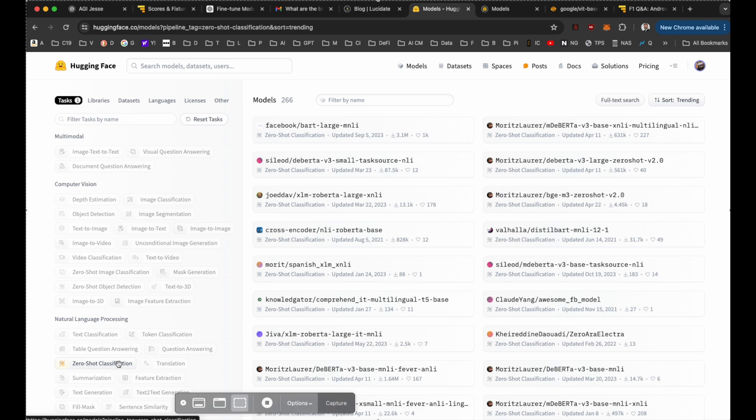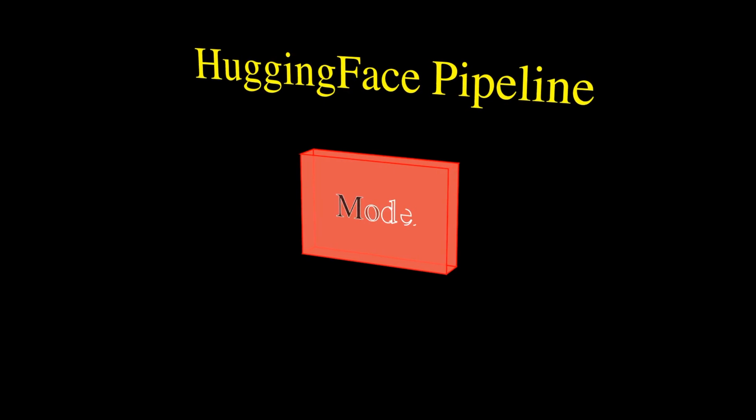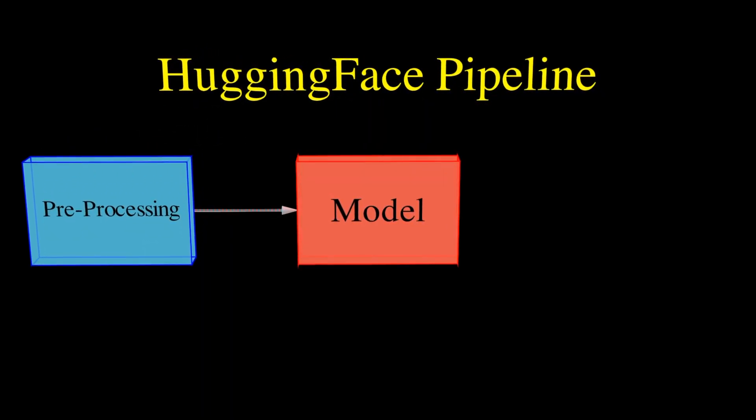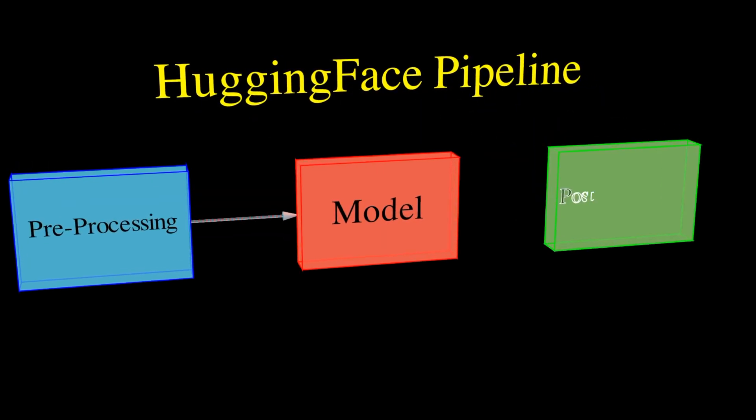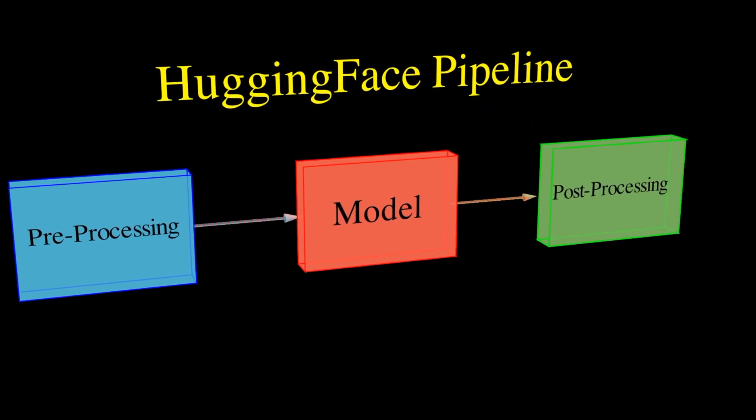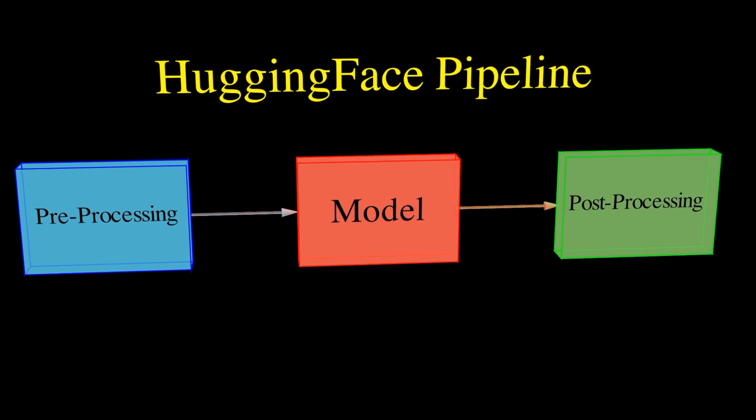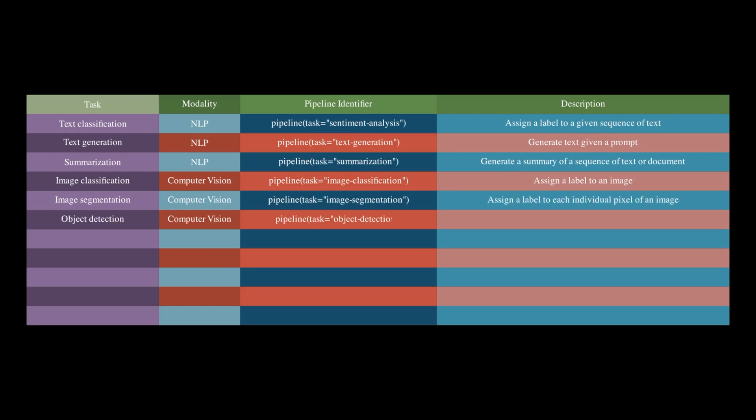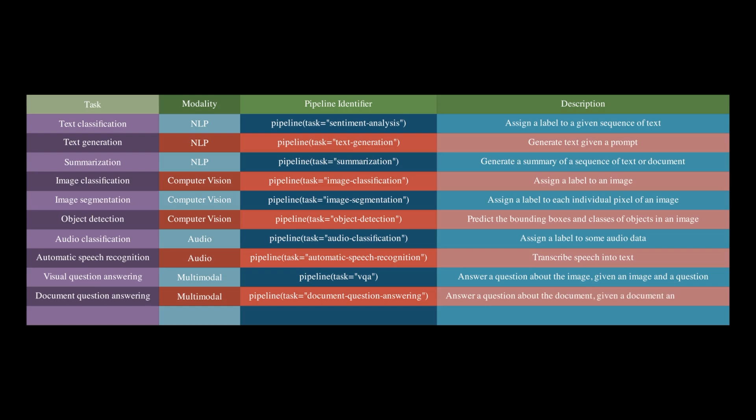The pipeline is the easiest way to get started with LLMs. Not only will it provide you with a suitable model for your task, it will handle all of the pre and post processing for you. Here's how it works. You can choose from a variety of natural language processing, computer vision, audio and multimodal AI tasks. A subset of the full list is available in the table on your screen.